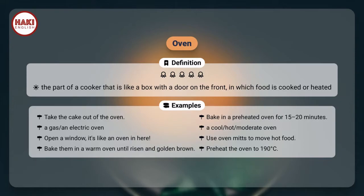Examples: Take the cake out of the oven. Bake in a preheated oven for 15–20 minutes. A gas, an electric oven. A cool, hot, moderate oven.